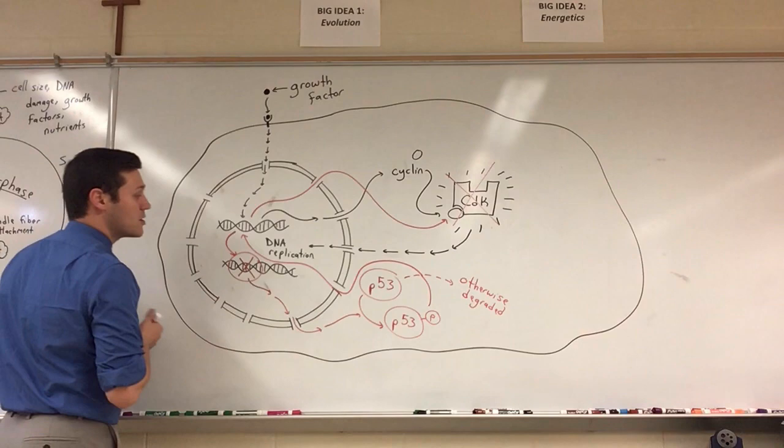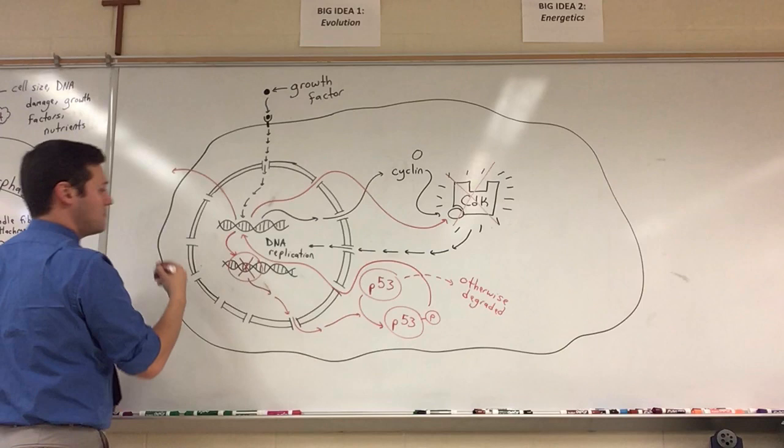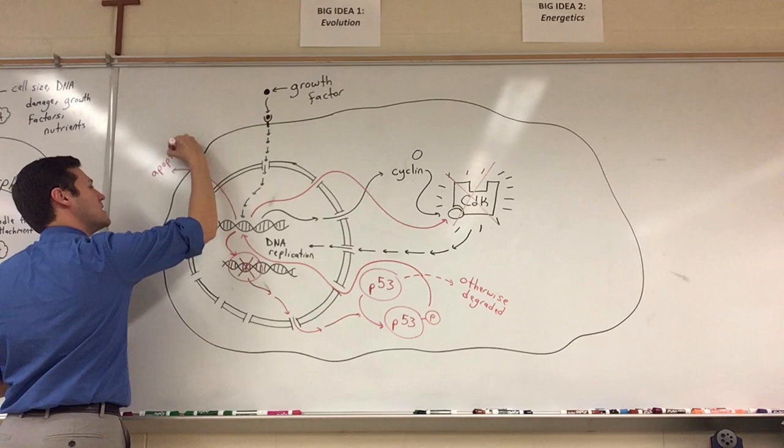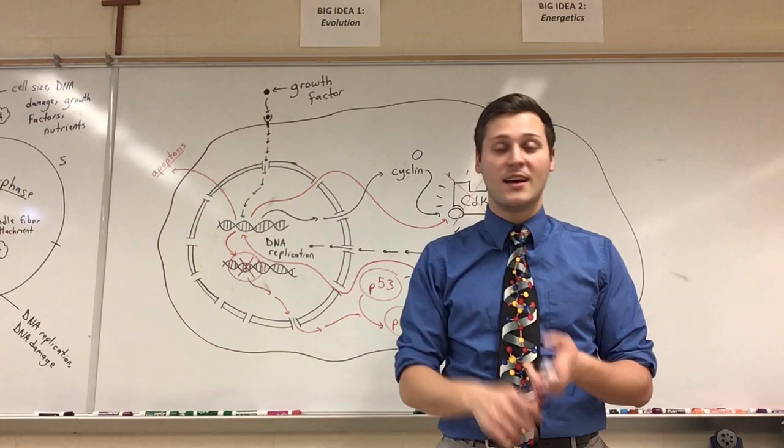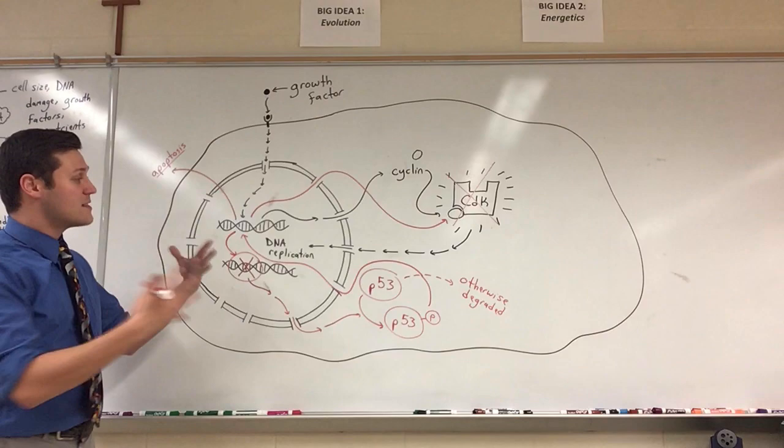Now, if the DNA damage is beyond repair, what P53 could also do is lead to the expression of certain DNA molecules to cause apoptosis. And oftentimes, this apoptosis works by disrupting the mitochondria. And if we disrupt the mitochondria, it would prevent the cell from making energy. If the cell's not getting energy, it's gonna die.